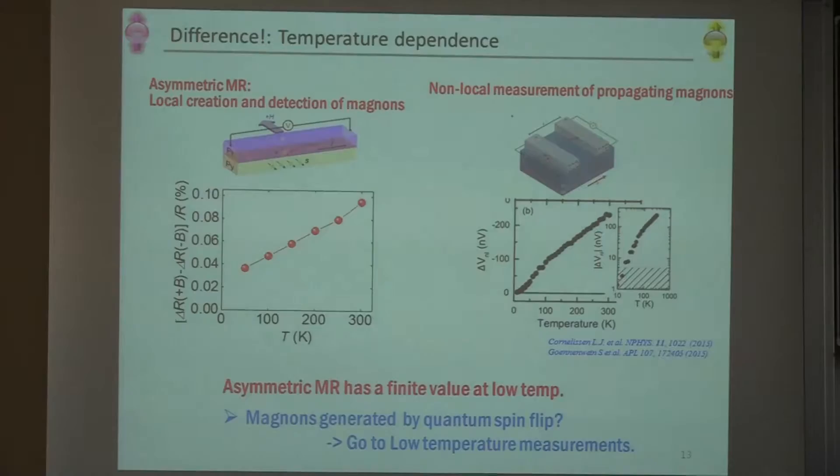Temperature dependence: as you see in this figure, the magnon resistance obtained by non-local measurement goes to zero by decreasing temperature to zero K. However, if we extrapolate this MR to zero K, it seems we get a finite value, even at zero K. So there's a difference. Because now we see the asymmetric MR has a finite value at low temperatures, this magnon is generated by quantum spin-flip. So we go to the low temperature measurements.